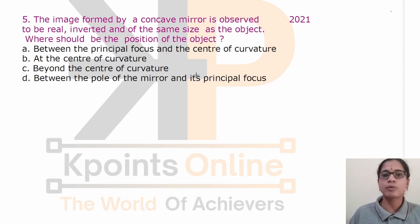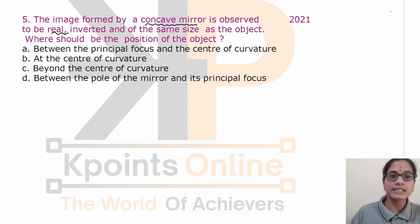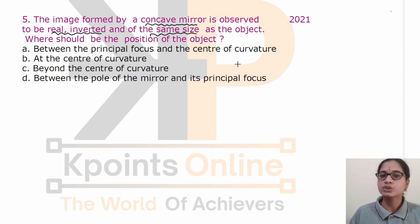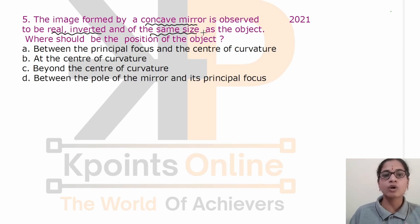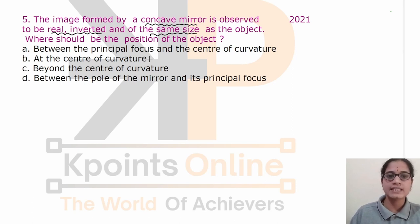The image formed by a concave mirror is observed to be real, inverted and of the same size as the object. Where should the object be placed? In case of a concave mirror, when the object is placed at exactly the center of curvature, we get an image that is real, inverted and of the same size. So the correct answer is: the object should be placed at the center of curvature — option B.